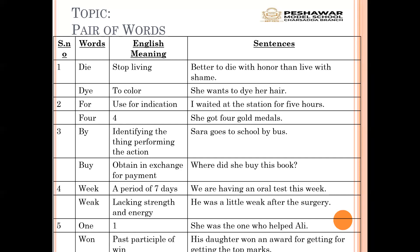All of you done? Raise your hands. If you have drawn proper margin lines and underlining, good. Now you should draw four columns: one is for serial number, one is for the words, one is for the English meanings, and the last is for the sentence. The Urdu meaning I will tell you orally.